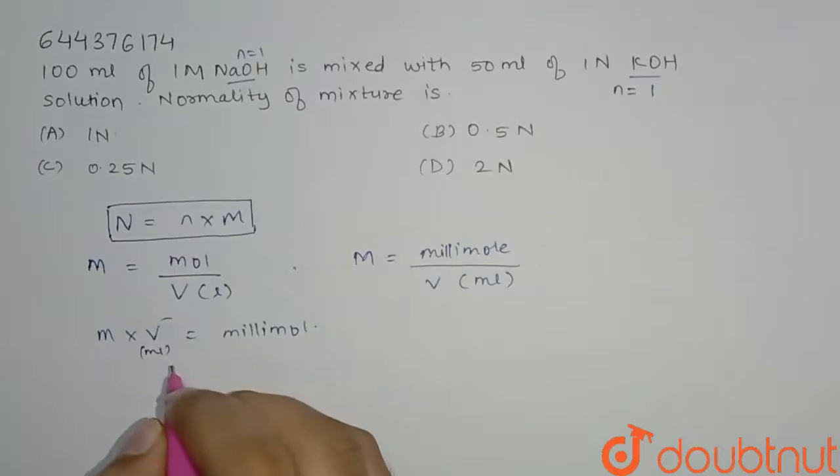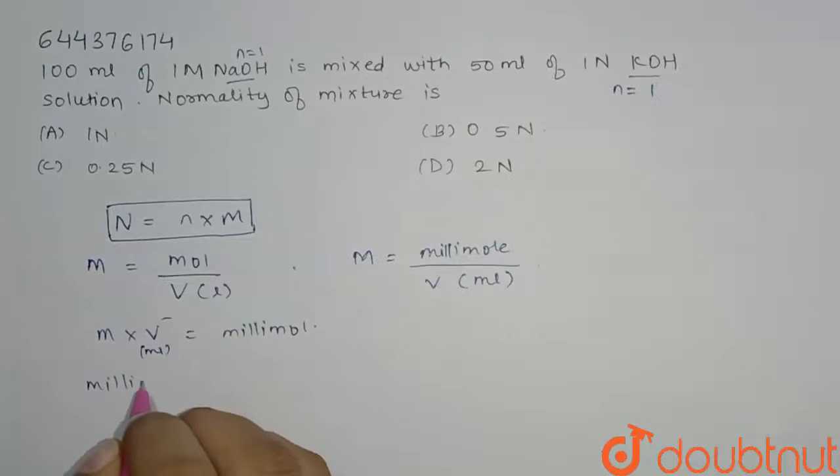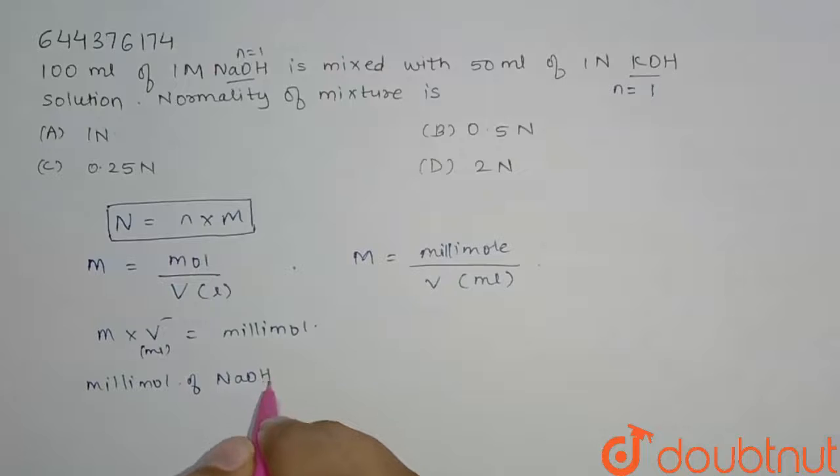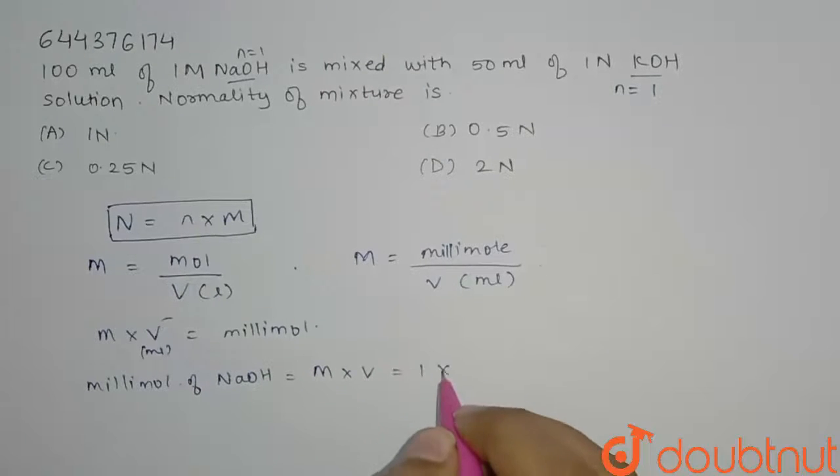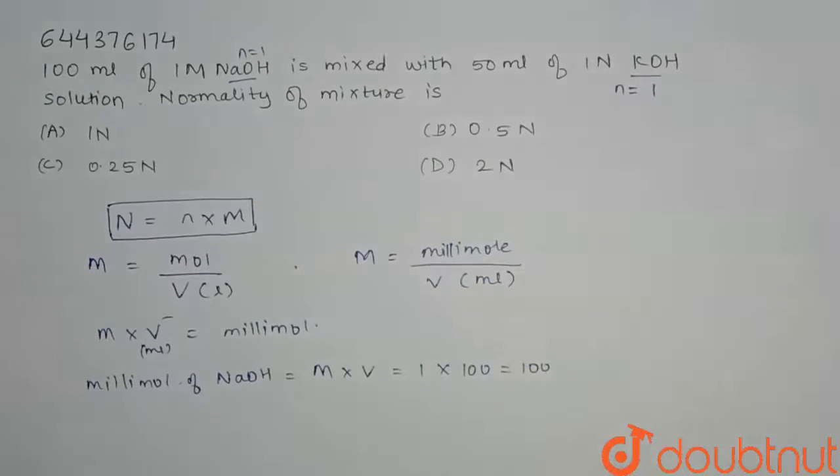So now millimole of NaOH, we will find first for NaOH. It is equal to M times V. We have their values, M is 1 and volume is 100. So here answer will be 100.